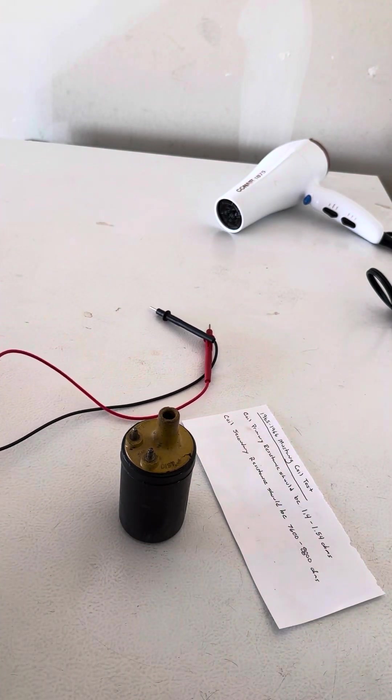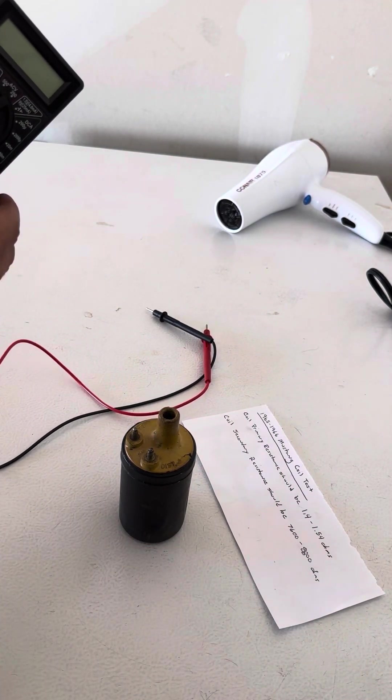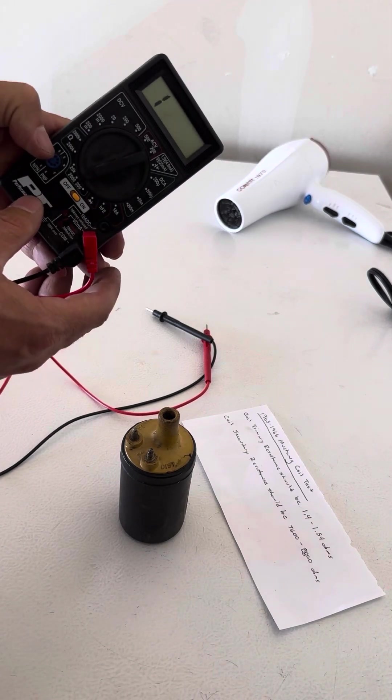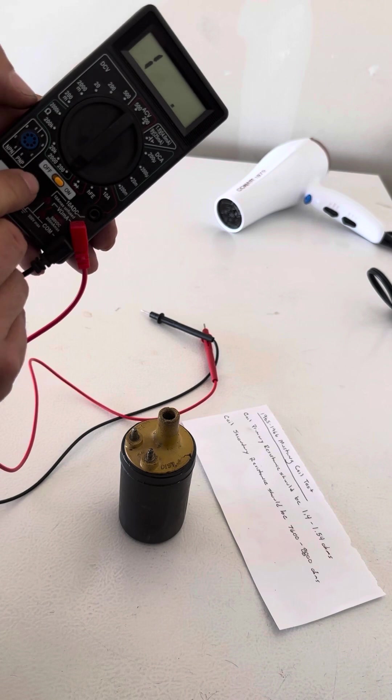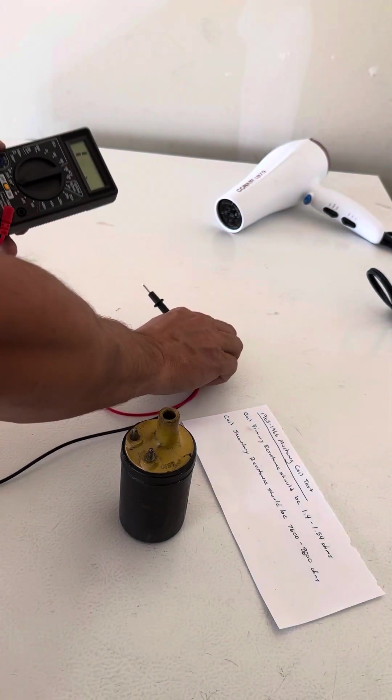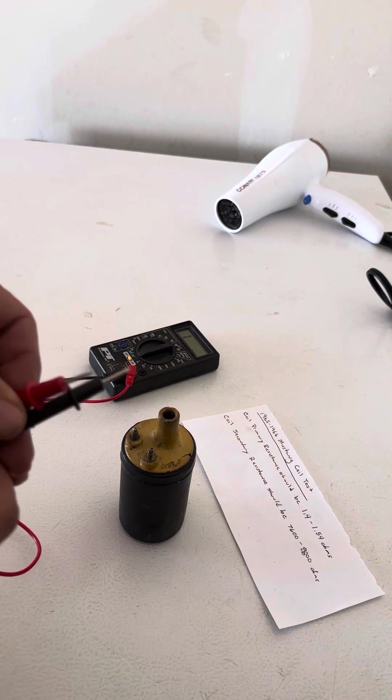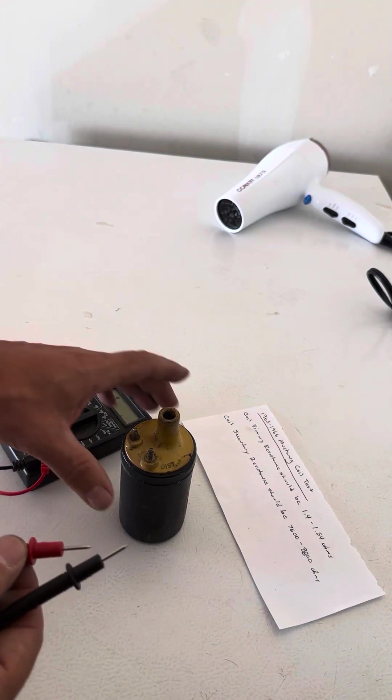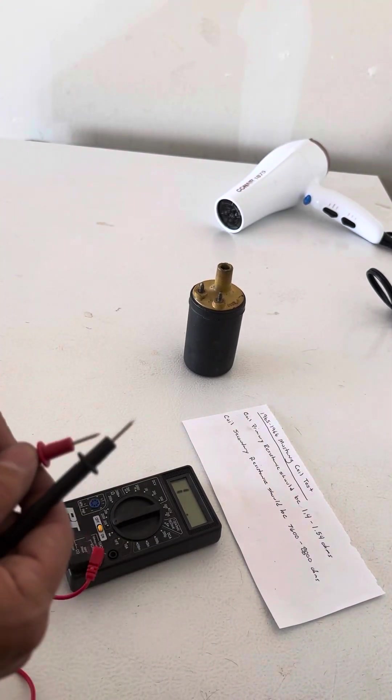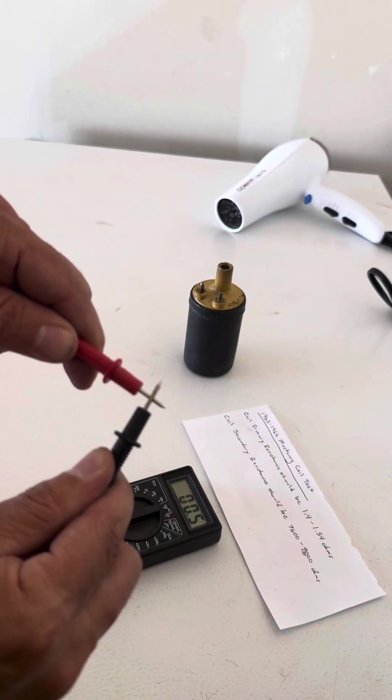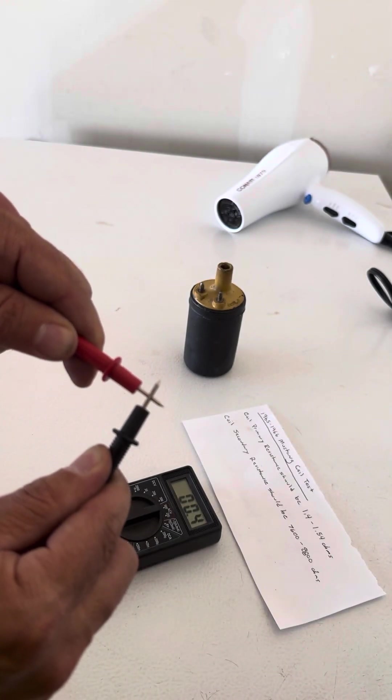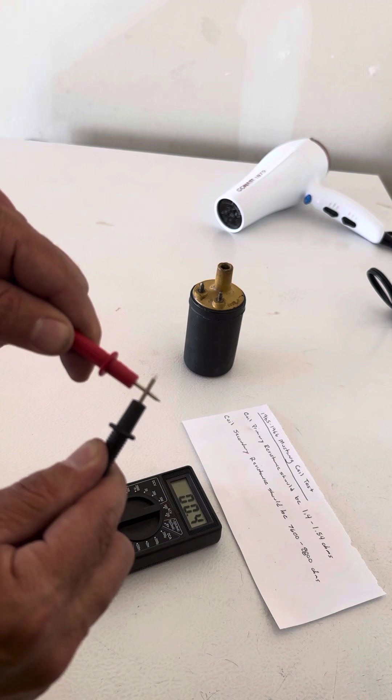What you're gonna do is turn on your multimeter and turn it to the 200 ohms setting. To calibrate this, you're gonna touch these two leads together and see how it doesn't go all the way down to zero.